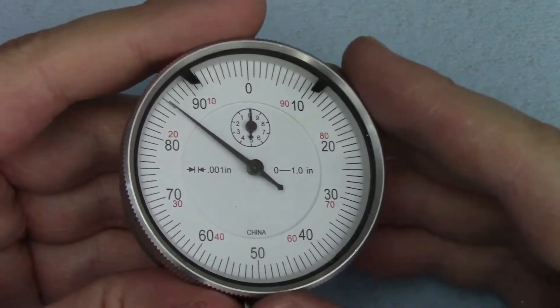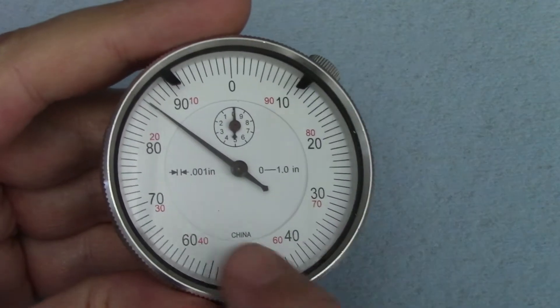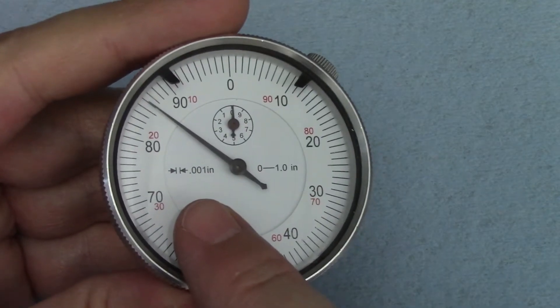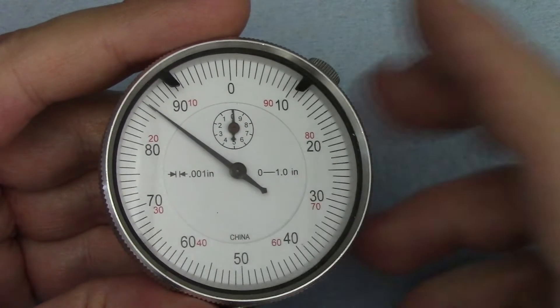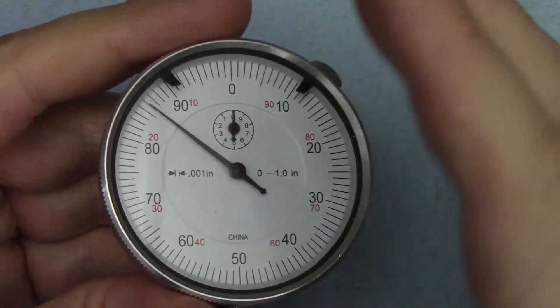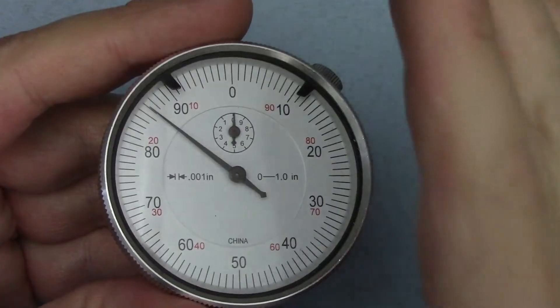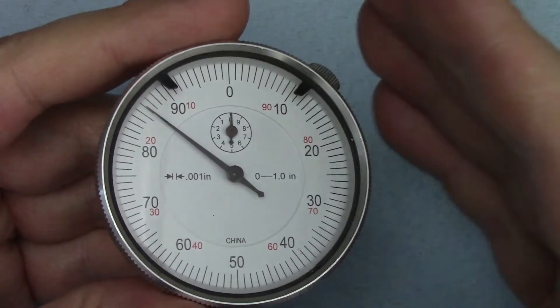The first thing you're going to want to do when you grab an indicator of any kind is look right here on the face. This is telling you what each graduation is. In this case, one thousandth of an inch.